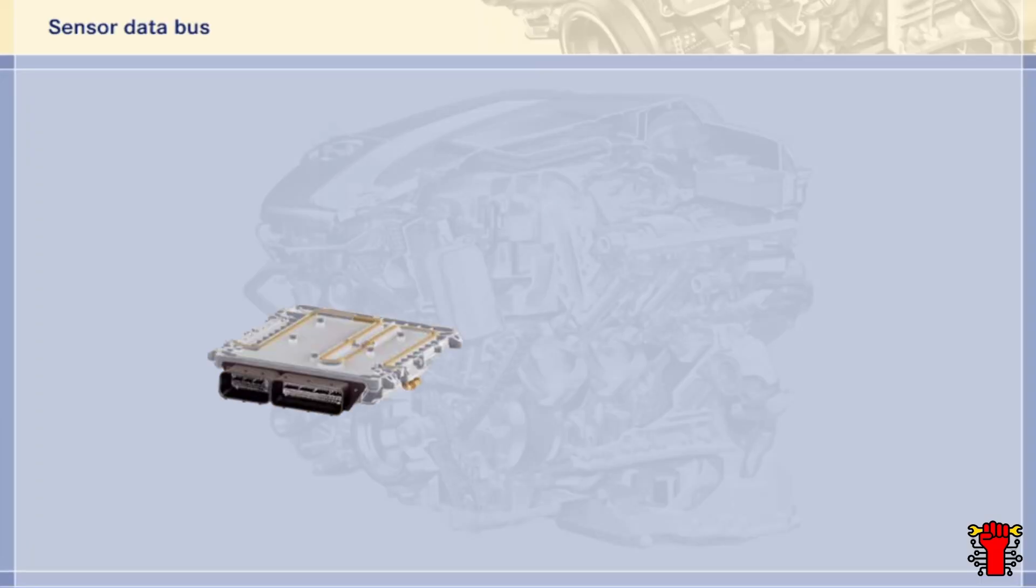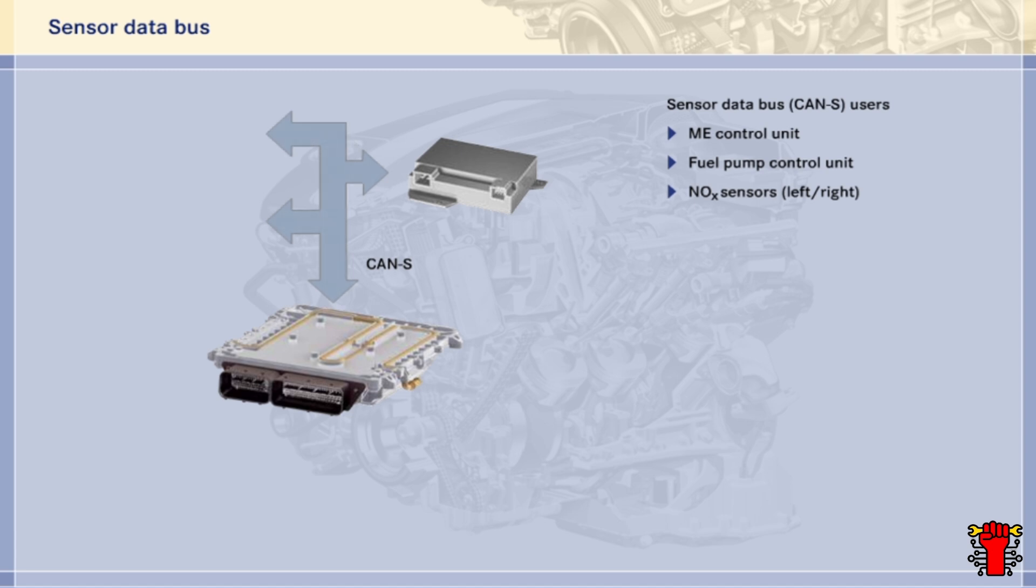The DE engine has an additional sensor data bus, CAN S, which is controlled by the ME control unit. Also using the bus, in addition to the ME and fuel pump control units, are the two nitrogen oxide sensors with integral control units. The sensors are required for stratified charge operation. The additional CAN S bus only links these four bus users and, amongst other things, permits diagnosis of the fuel pump control unit.